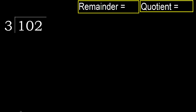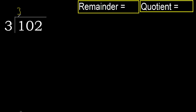102 divided by 3. 1 is less, therefore next. 10 is not less, therefore work with 10. 3 multiplied by which number is nearest to 10 but not greater? 3 multiplied by 4 is 12, which is greater. 3 multiplied by 3 is 9, which is not greater. 10 minus 9 is 1.